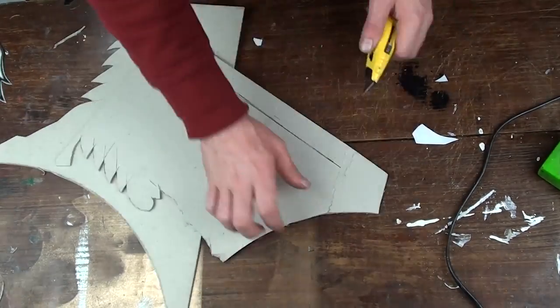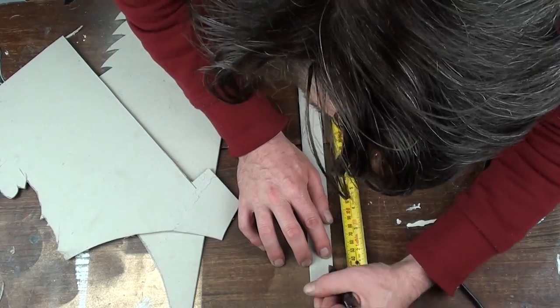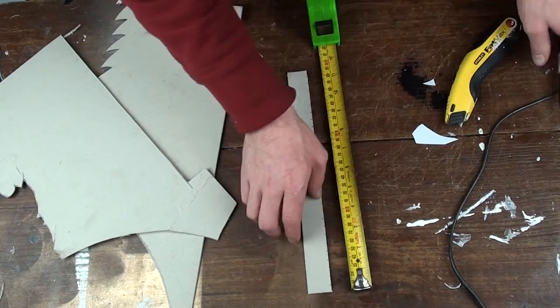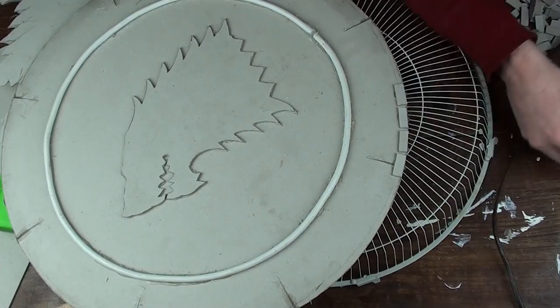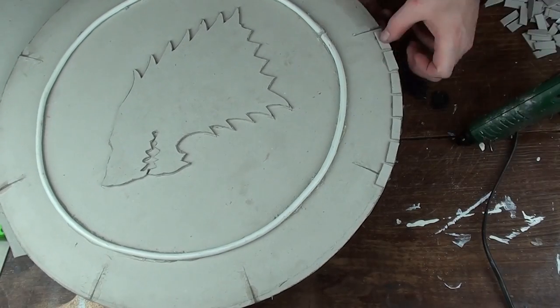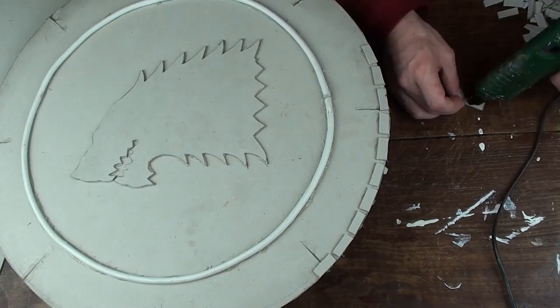So now you're going to measure and cut out 48 3x1cm rectangles, like I am right here. And you're going to glue those to the outside of the shield, leaving a little gap in between each one.